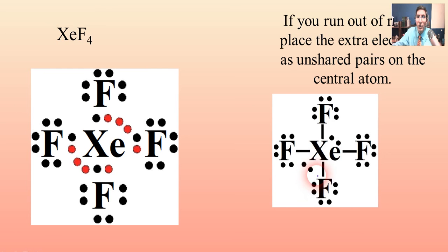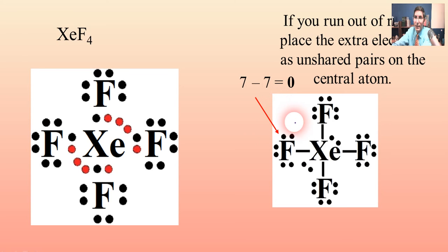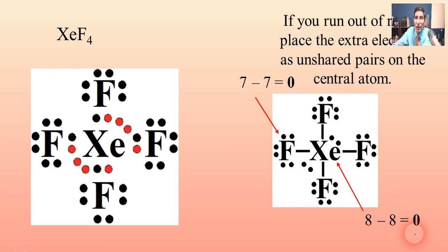Let's check the formal charge to make sure this is the best structure. Fluorine normally has seven according to the periodic table, and counting its electrons we subtract seven — sure enough, it's zero. For xenon, the periodic table says it should have eight; counting the four bonds plus the two unshared pairs gives us eight, so eight minus eight is zero. All zeros, so this is a good structure.